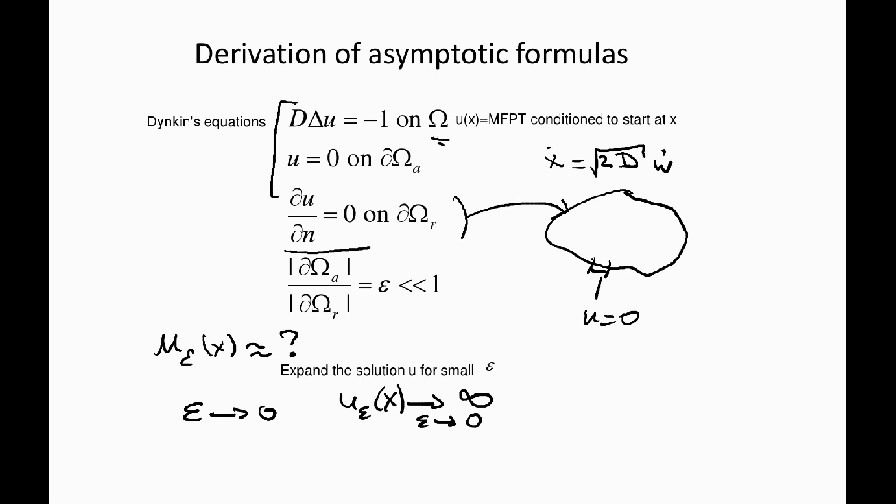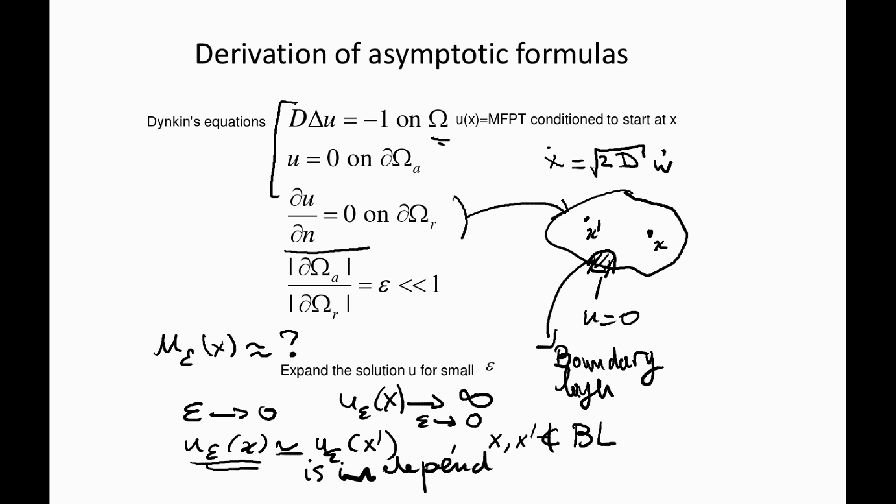If we think about to get intuition about what the solution looks like, if we start at position x here, or if you start at position x prime, the leading order term should not see the position, unless you start in a very small part near the boundary, which is called the boundary layer. If you start in the boundary layer, you may see the initial position. But in principle, it should not depend. At least the leading order term should not depend on x, as long as x and x prime are not in the boundary layer, suggesting that at leading order, u epsilon is independent of position.